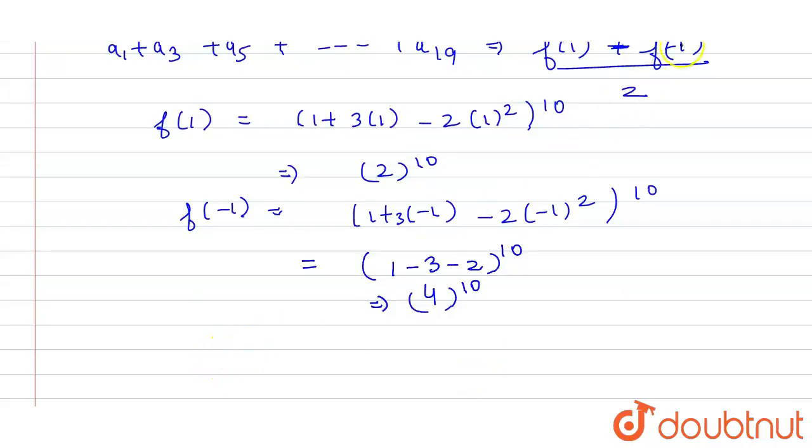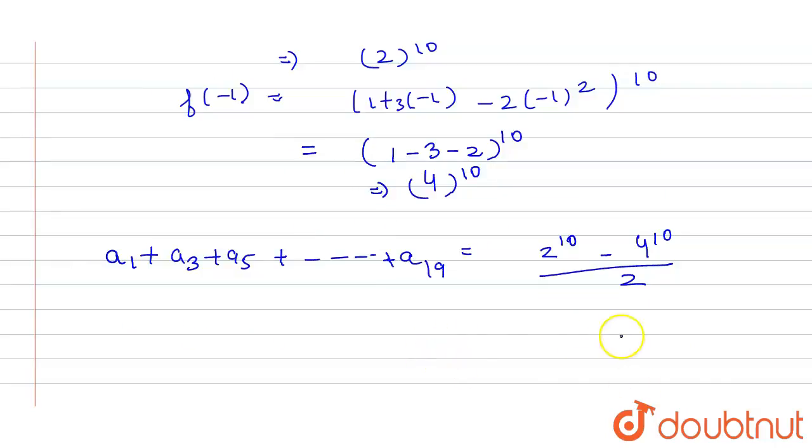So putting the value in the general formula, we will get a1 plus a3 plus a5 plus up to a19 will be equals to f(1) that is 2 raised to power 10 minus f(-1) that is equals to 4 raised to power 10, divided by 2. Now this can be written as 2 raised to power 9 minus 2 raised to power 19. And this is the desired proof for the given question.